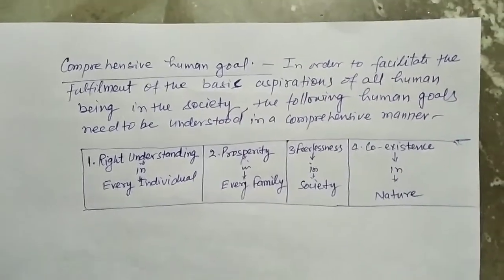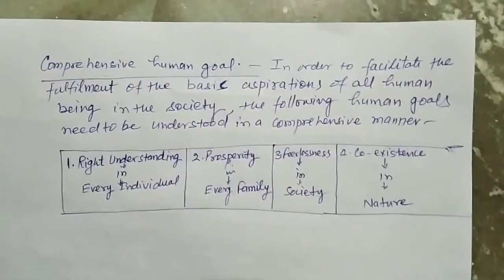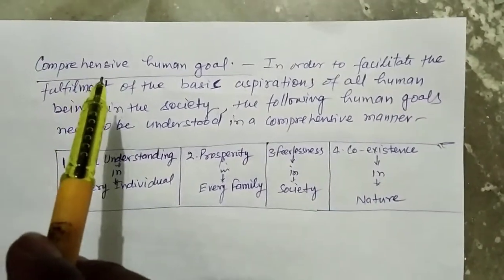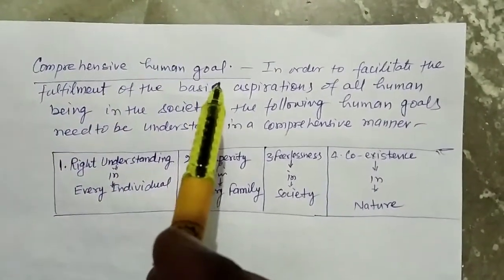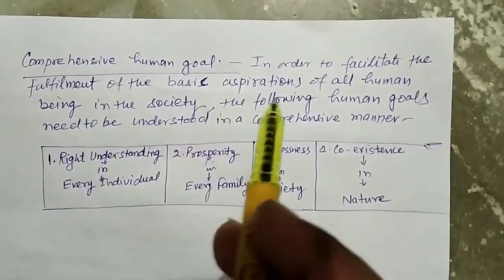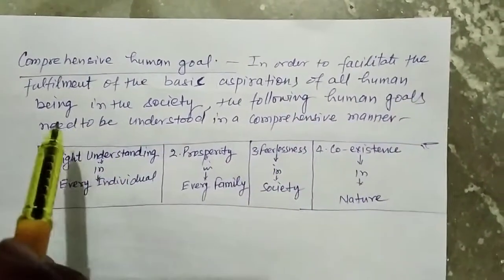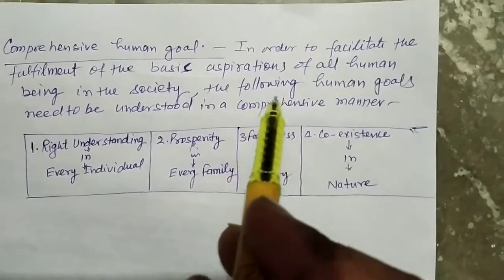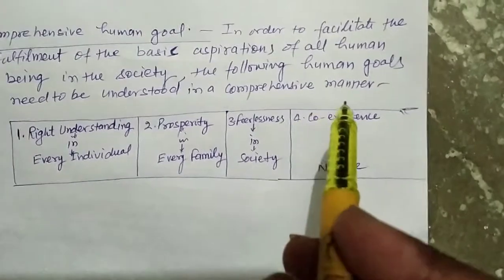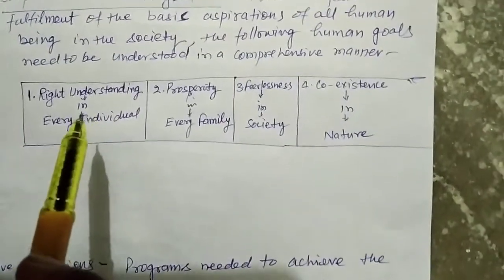Dear students, in Harmony in Society, we are coming to the very important topic: Comprehensive Human Goal. In order to facilitate the fulfillment of the basic aspirations of all human beings in the society, the following human goals need to be understood in a comprehensive manner. These are the four comprehensive human goals.